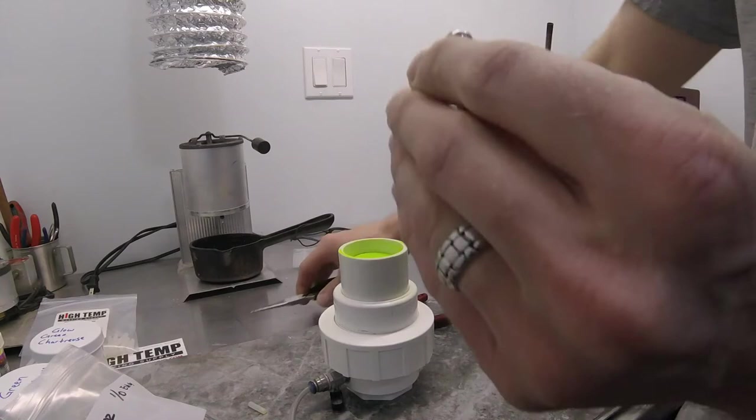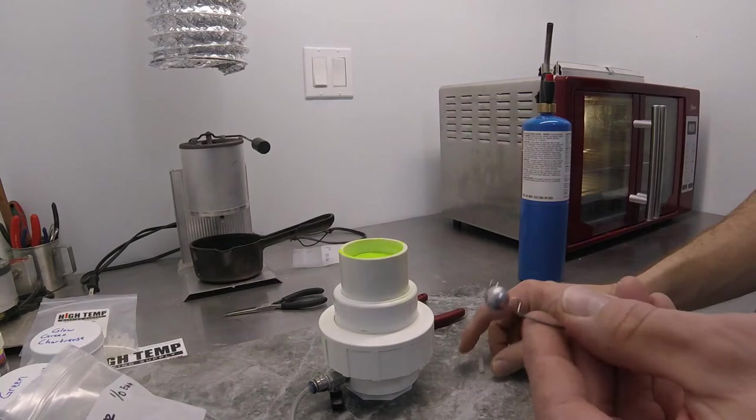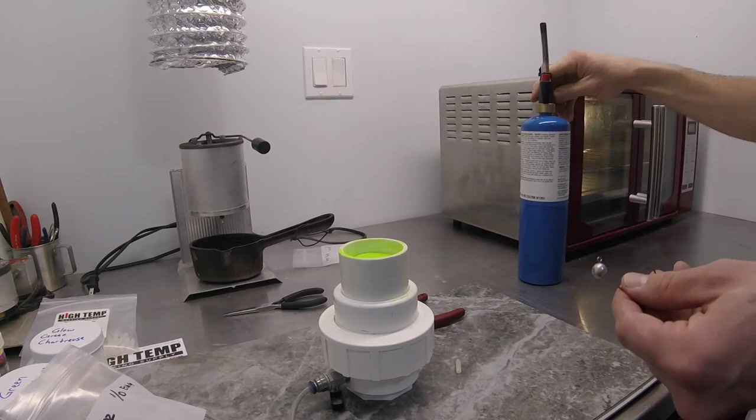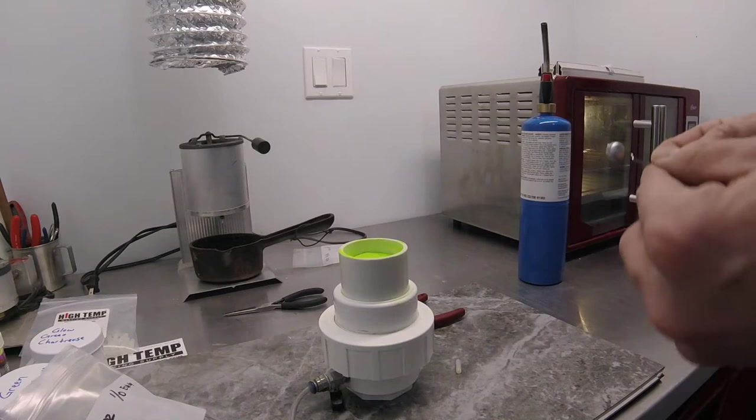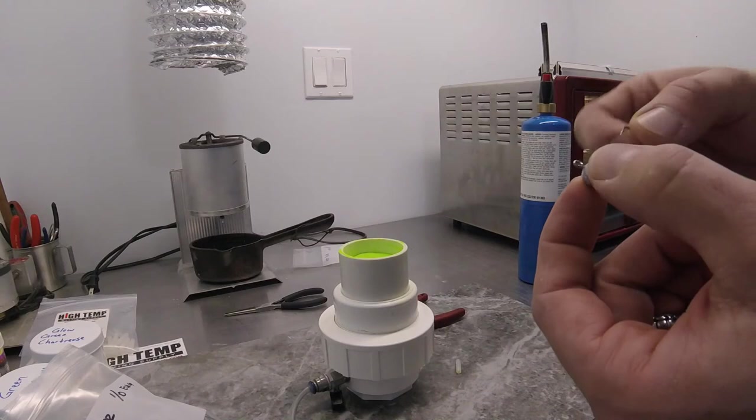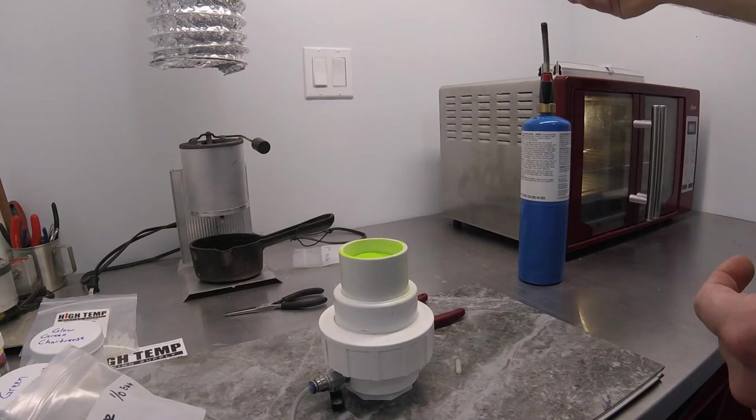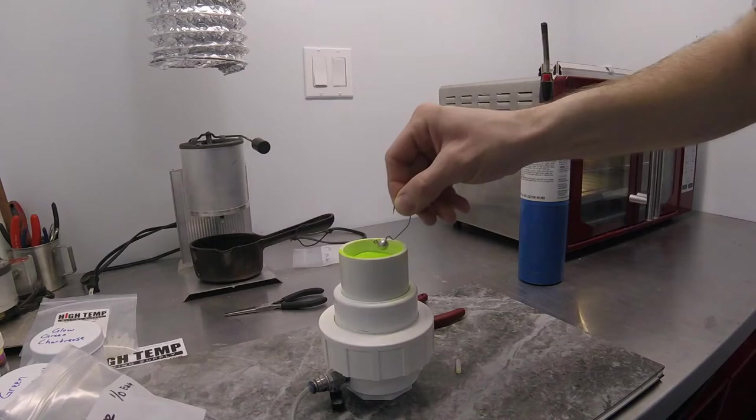You're going to want to heat the jig up. Careful not to burn yourself. I use a propane torch, turn the flame down low, and try not to heat the hook up too much. Just want the lid warmed up just a little bit. One, two, three, four, five, six.